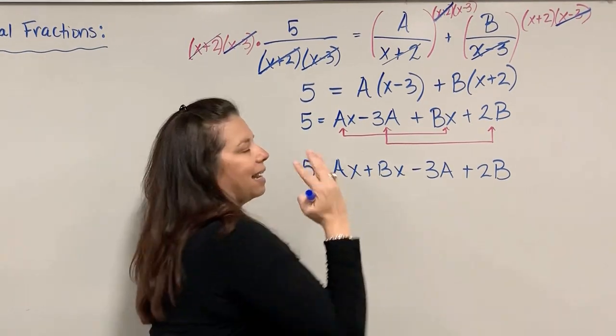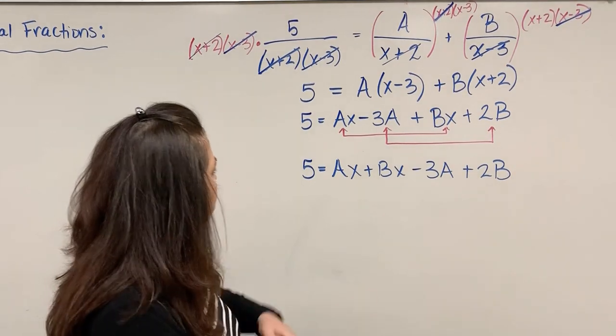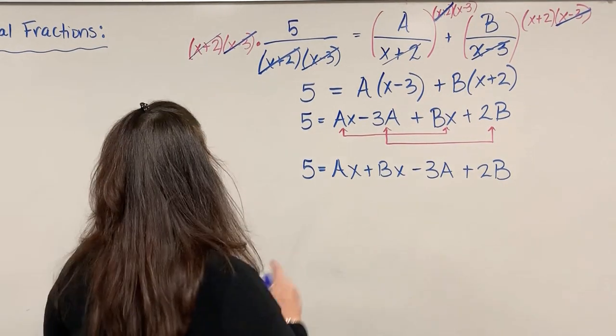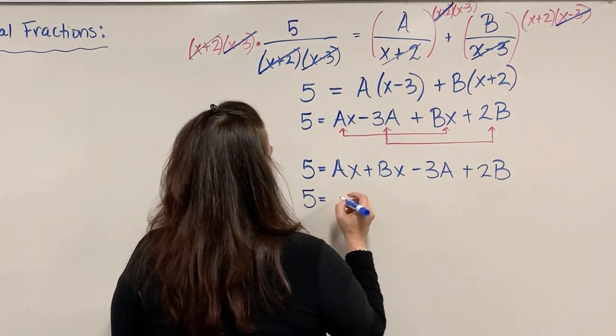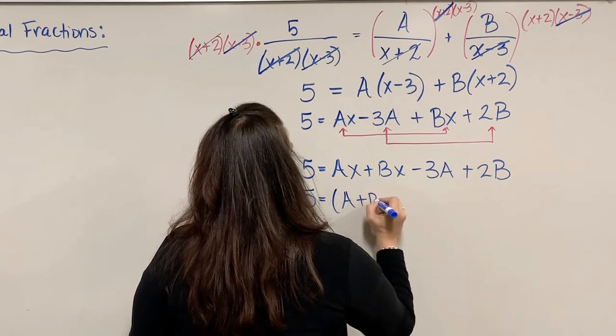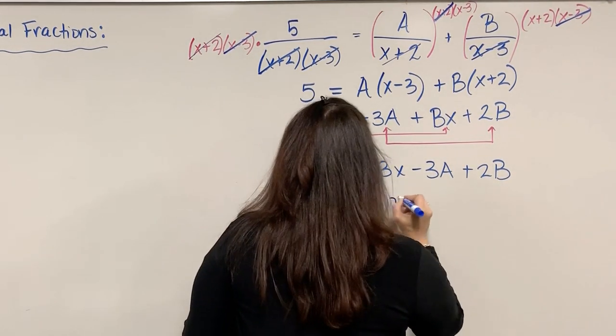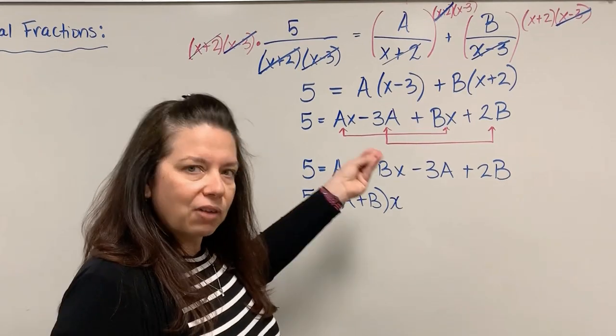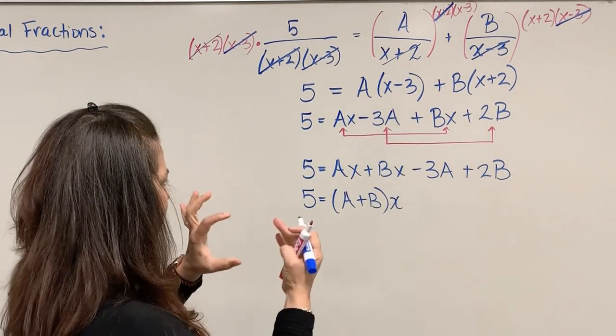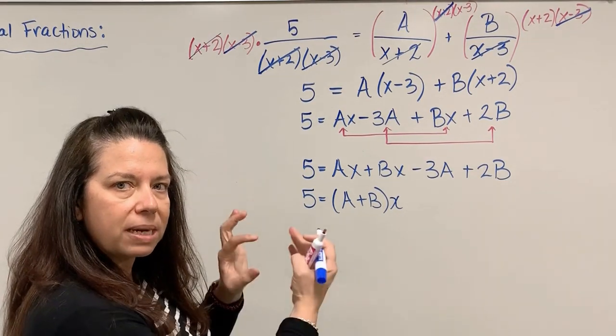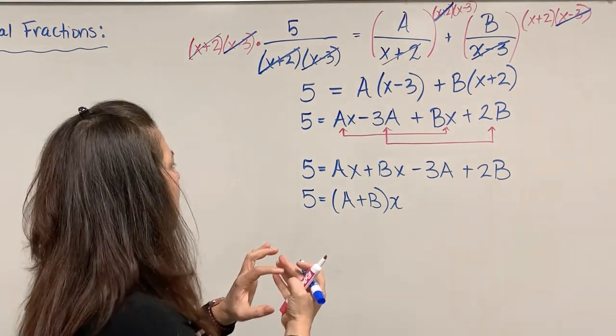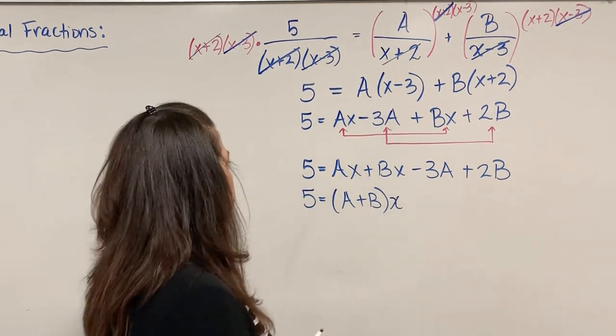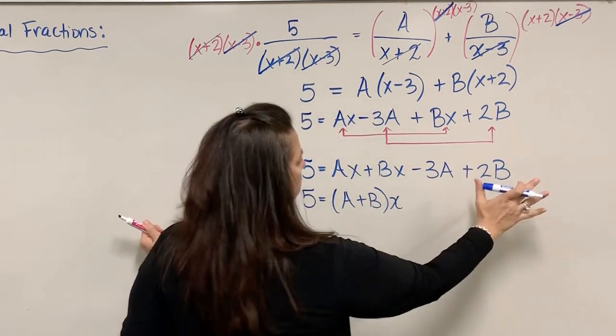We're making some progress. By doing this, I can now visibly see that I have two terms that both contain an x. Let's factor out the x in those two terms. So I have 5 = (A+B)x. I want that x behind it because A and B are just constants that we're going to figure out what they are.